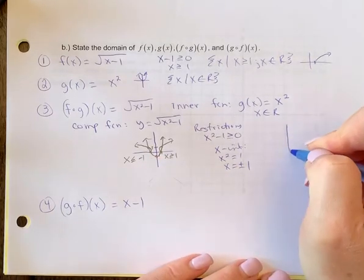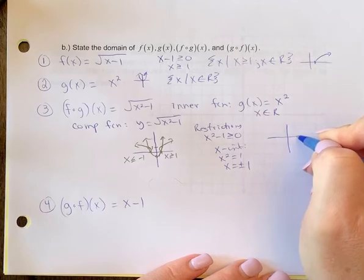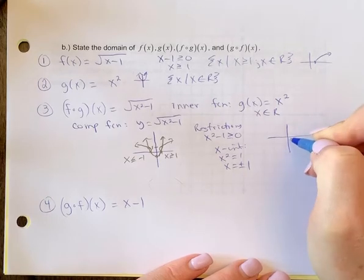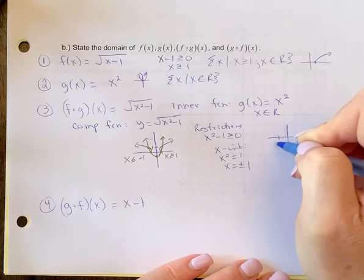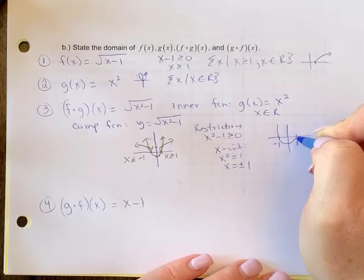And then you can use roots and test points, case analysis, sign analysis. But I use the graphical approach. I know that my intercepts are 1 and negative 1, and it's a parabola that opens up.